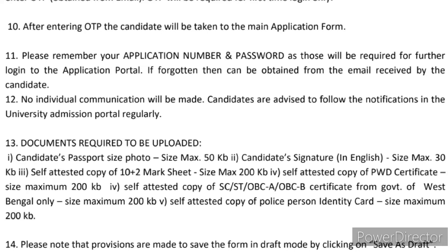The next three documents are required for the reserved category students. Number four is the self-attested copy of PWT certificate, maximum size 200 KB. Document number five: self-attested copy of SC, ST, OBCA, or OBCB certificate. And document number six: self-attested copy of police person identity card, maximum size 200 KB.